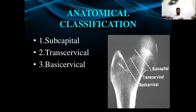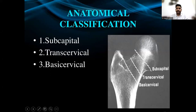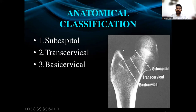Now how to classify? There are various types of classification for fracture neck of femur. According to anatomical classification, there are three types: subcapital — at the junction of the head and neck — transcervical, and basicervical. The basicervical fracture is at the tip of the greater trochanter. As indicated by the lines on the X-ray image, these represent the three anatomical types.